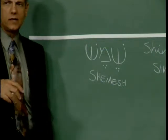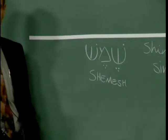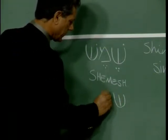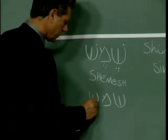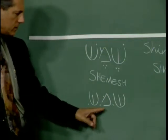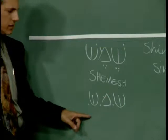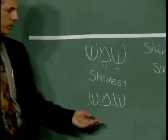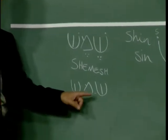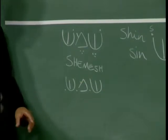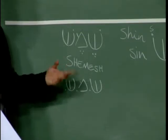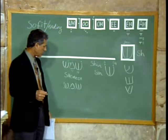It's interesting that the word Shemesh comes from a root of Shin, Mem, Shin. We write roots with dots separating the letters so people will not think it's a word. This root — the Shin, Mem, Shin root — implies or has a concept of servant. Shemesh is a servant in Hebrew.